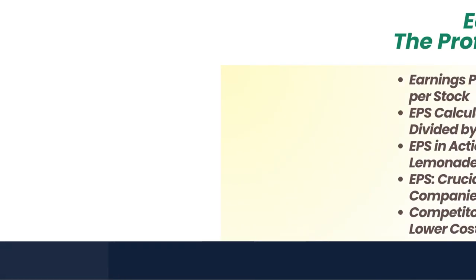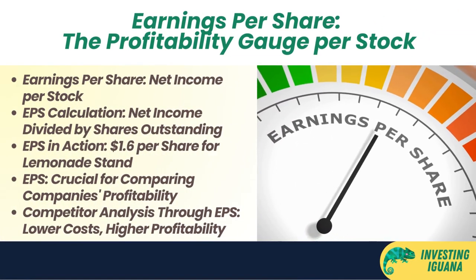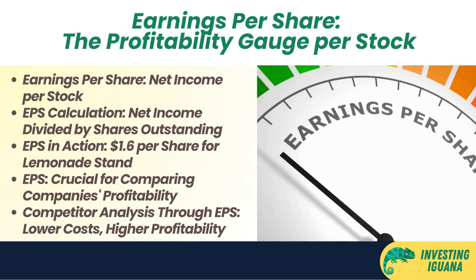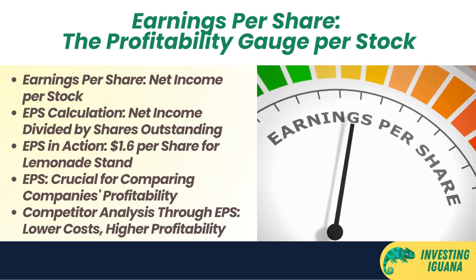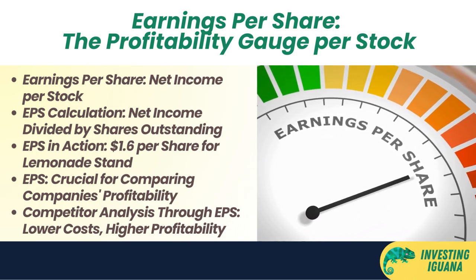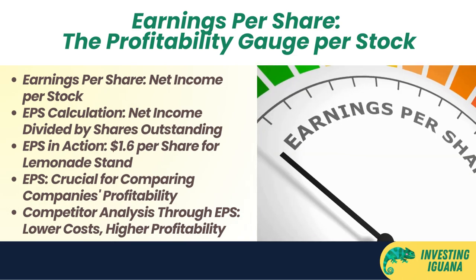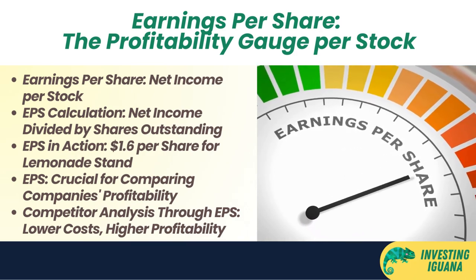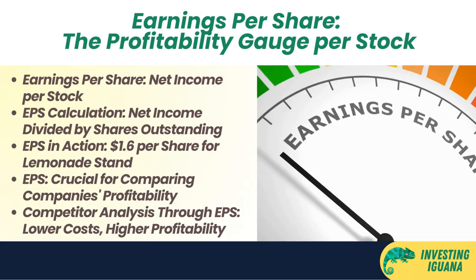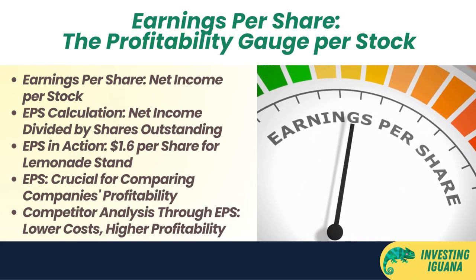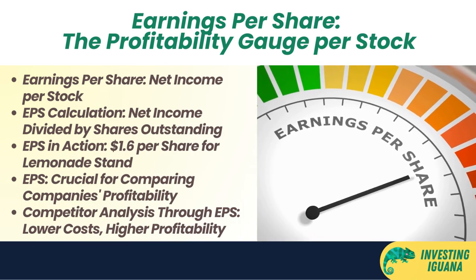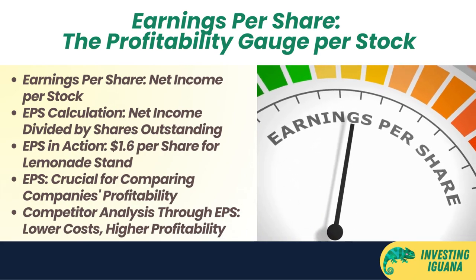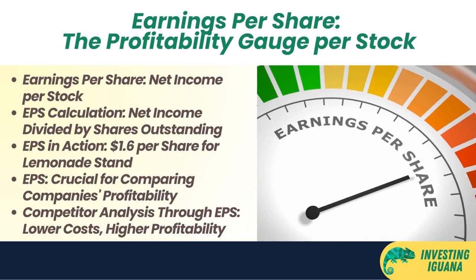Earnings per share (EPS) is the amount of net income that a company earns per share of its common stock outstanding — it shows how profitable a company is on a per share basis. To calculate EPS, divide net income by shares outstanding. For example, if your lemonade stand has 10 shares outstanding and earns $16 in net income, EPS = $16 ÷ 10 = $1.60 per share.